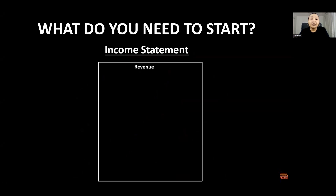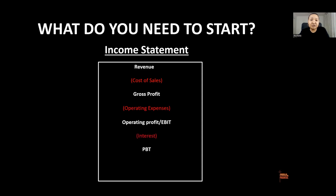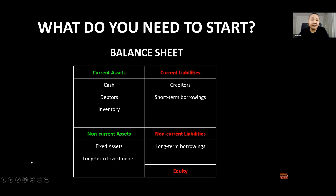Quick recap of the income statement: it starts with revenue, we deduct the cost of sales and that gets us to the gross profit. All the operating expenses get us to the operating profit, we deduct interest, we deduct tax, and it tells us if the company made a profit or loss. Then we move over to the balance sheet.